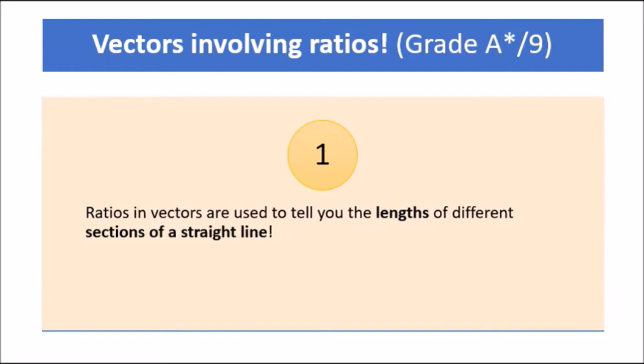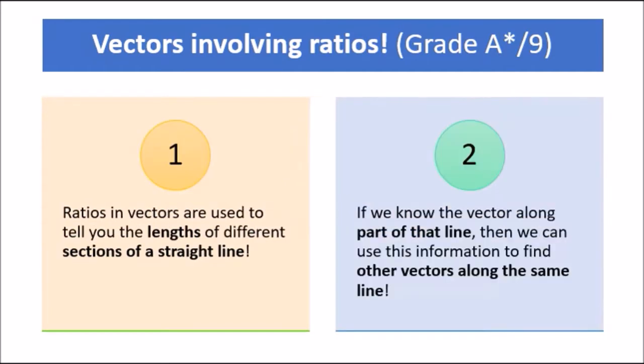So that's why we have to work with proportionality here. If we know part of the vector, we can use our ratio skills to work out another part. And this directly tells us that if we know the vector along part of that line, we can use this information to find other vectors along the same line. So here we go, this is all ratio and proportion. We'll probably be dealing with thirds and quarters. So let's check out an example.